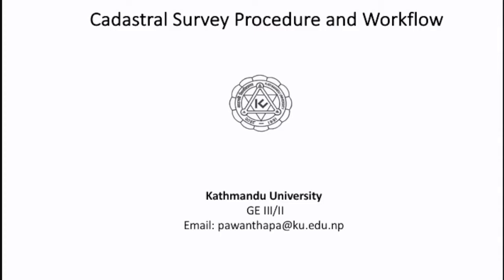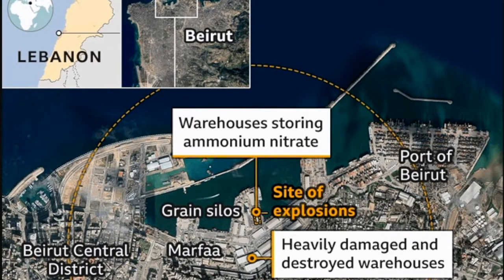Hello friends, let's talk about catastrophe survey procedure and workflow. This is one example of the previous topic: an annotated map. Here we can see Beirut, where an explosion occurred due to ammonium nitrate which was stored in a warehouse.